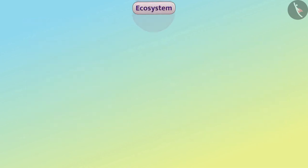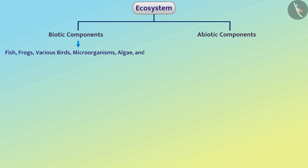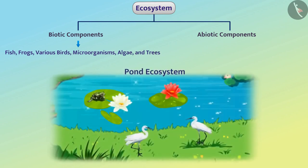Any ecosystem consists of biotic components and abiotic components. For example, fish, frogs, various birds, microorganisms, algae and nearby trees living in the pond ecosystem are all called biotic components. And rain, water, soil, heat, minerals etc. are all abiotic components.